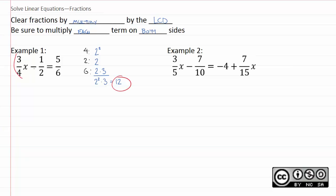Now, we're just going to multiply all three terms by twelve. So we'll have twelve times three-fourths minus twelve times one-half equals twelve times five over six.